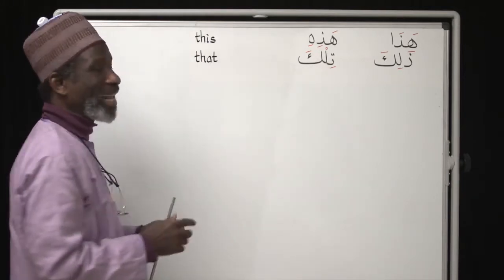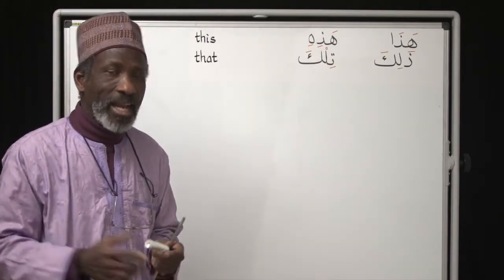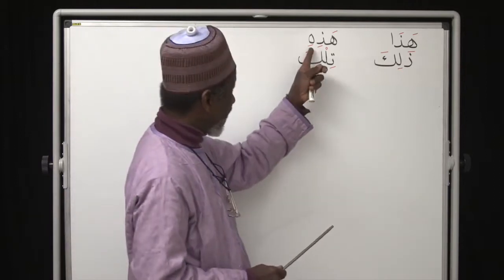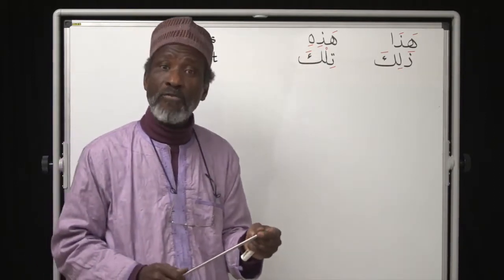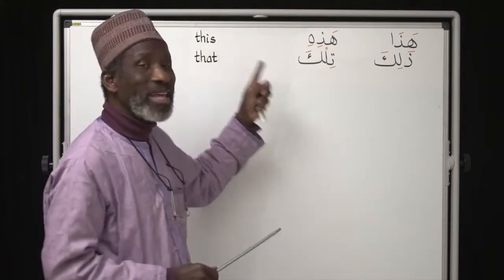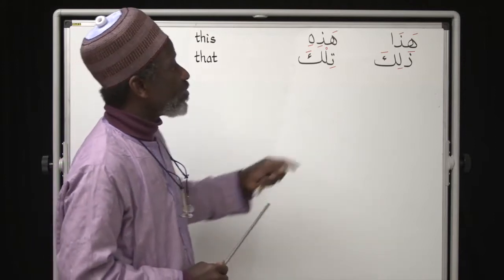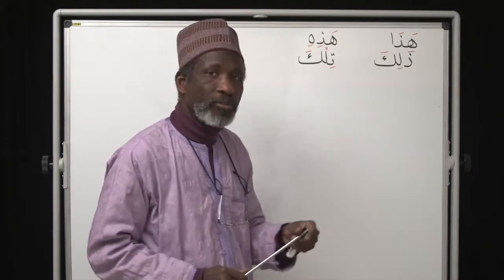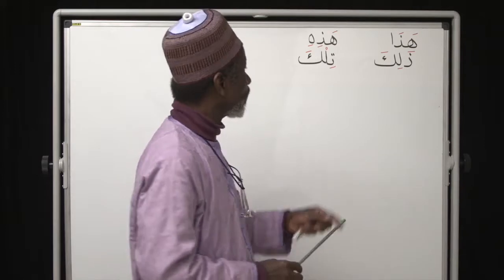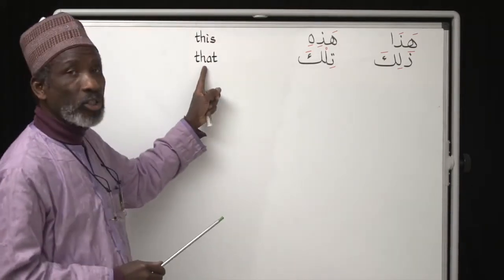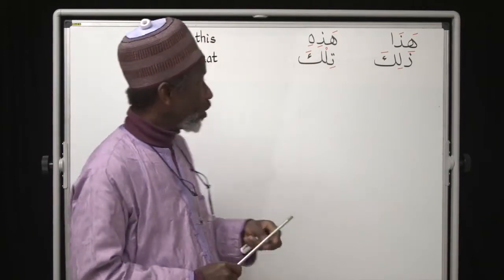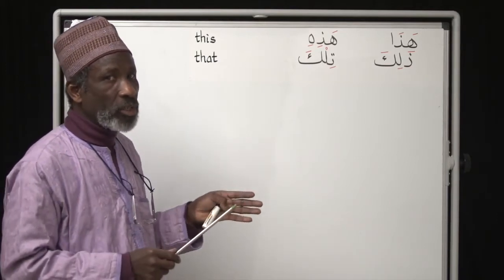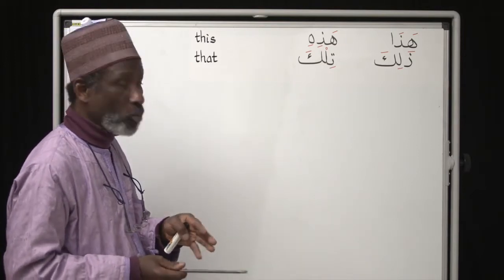Hādhā and hādhihi both mean 'this' or 'this is.' Hādhā is when you are referring to something masculine or male. Hādhihi is when you are referring to something feminine — but the same meaning: this or this is. Dhālika means 'that' or 'that is' and is for masculine. Tilka has the same meaning — 'that' or 'that is' — but for feminine. We are going to put these into practice to see them in action.